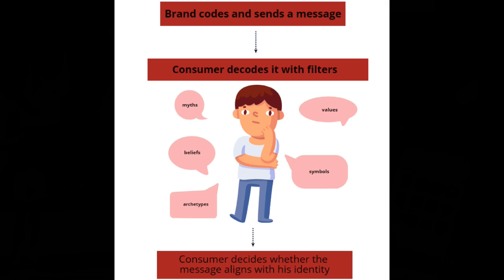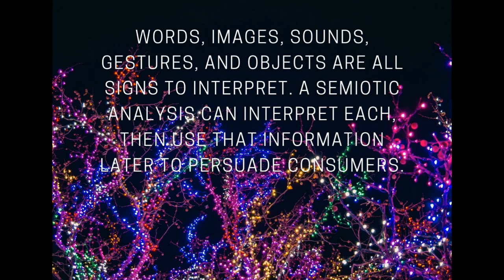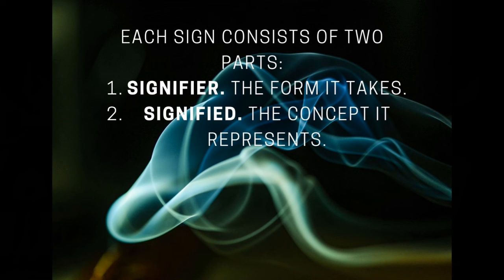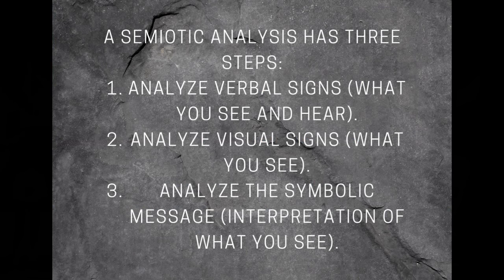How do you go from an unknown brand to a status symbol? You start by running a semiotic analysis. To conduct one, you need to know that words, images, sounds, gestures, and objects are all signs to interpret. A semiotic analysis can interpret each of them, then use the information to persuade consumers. Each sign consists of two parts: the signifier — the form it takes — and the signified — the concept it represents.